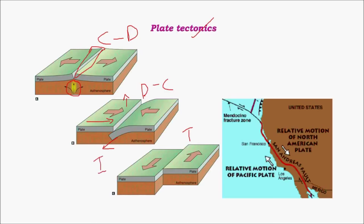For example, the Indian plate is sliding below the Eurasian plate, giving rise to a great amount of earthquakes in the Himalayan belt — that is, Nepal, Bhutan, and various Indian states — mainly due to the convergent or destructive boundary. At the transform edge, for example the San Andreas fault in western USA, a small part of the mass is moving upward while the mainland American plate is moving downward, giving rise to a fault line with frequent earthquakes.